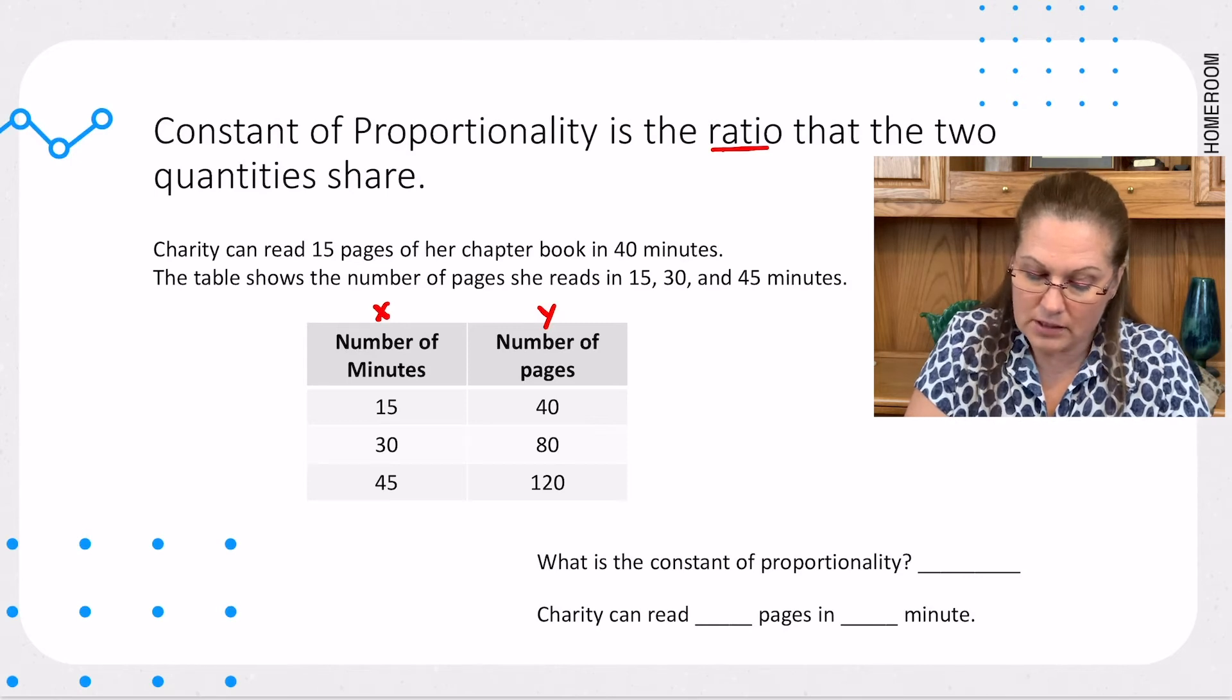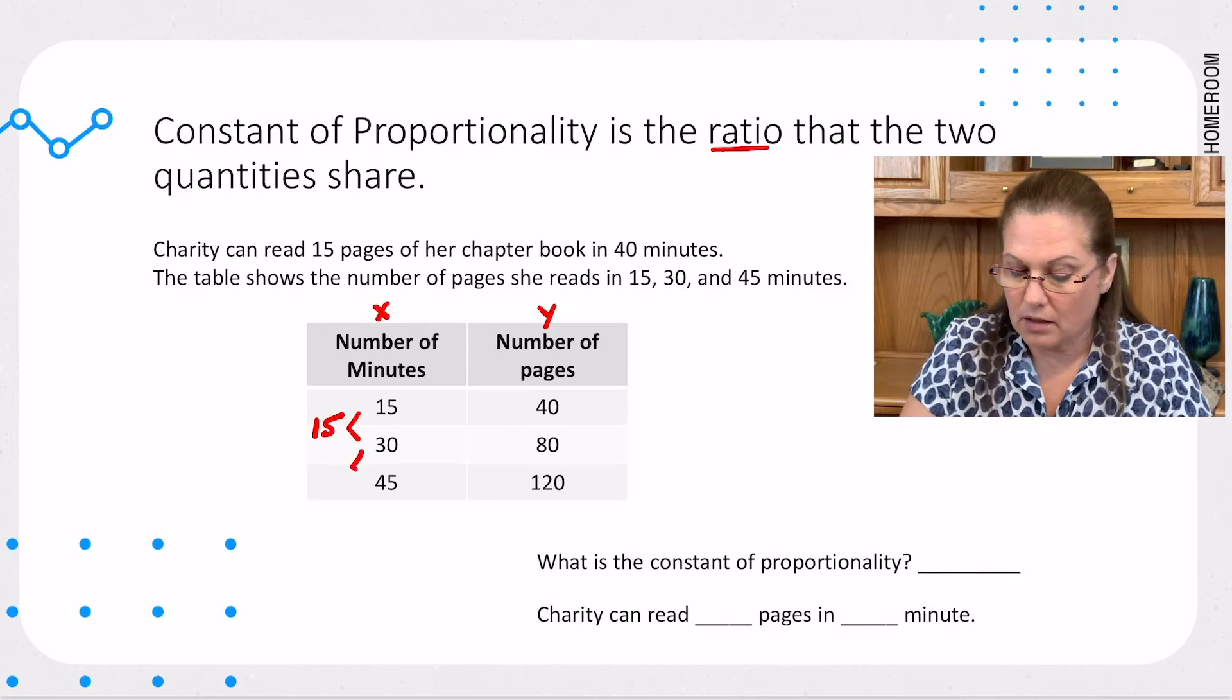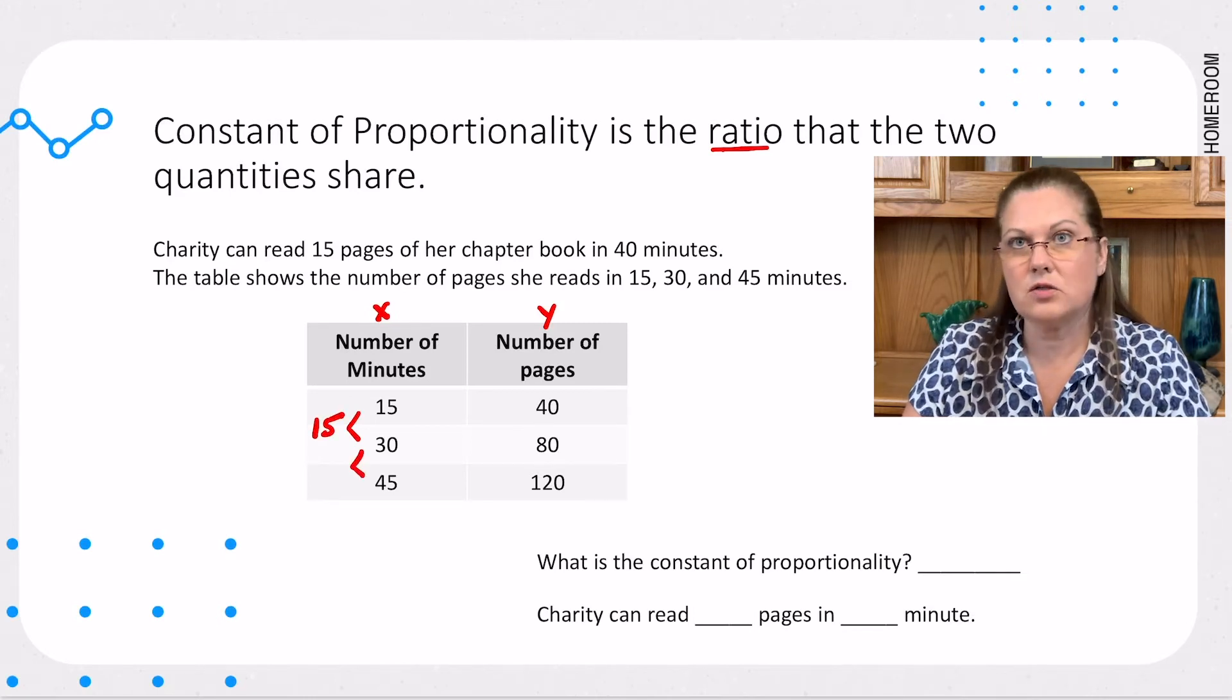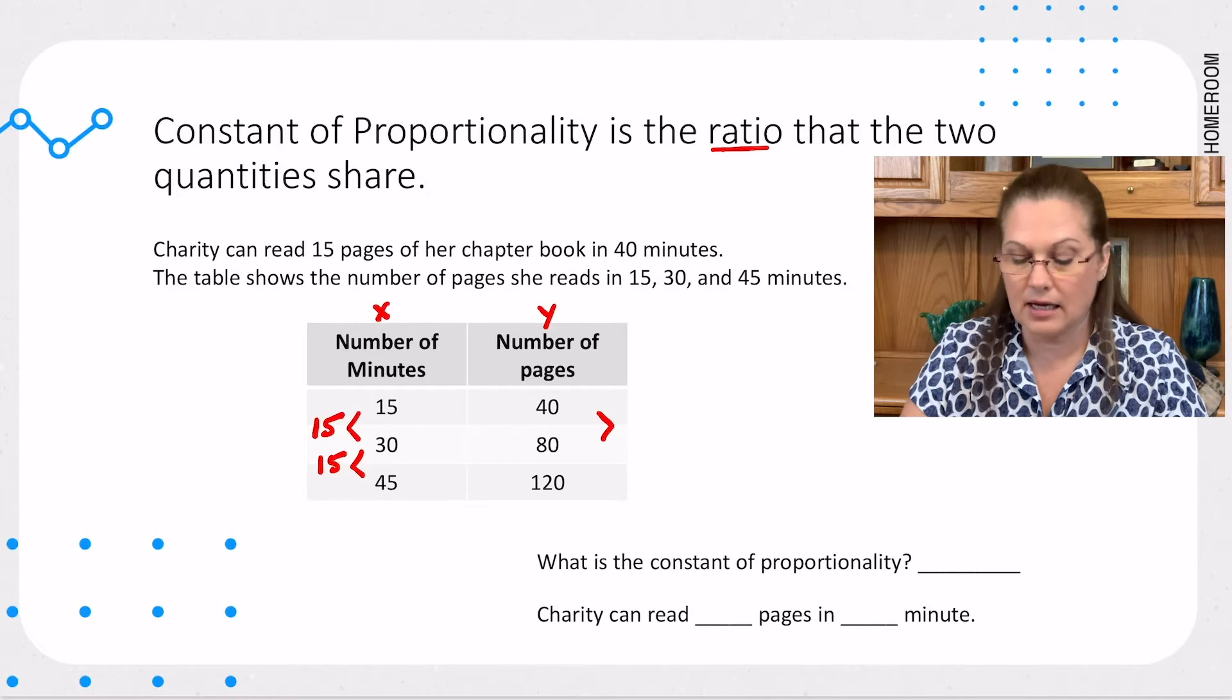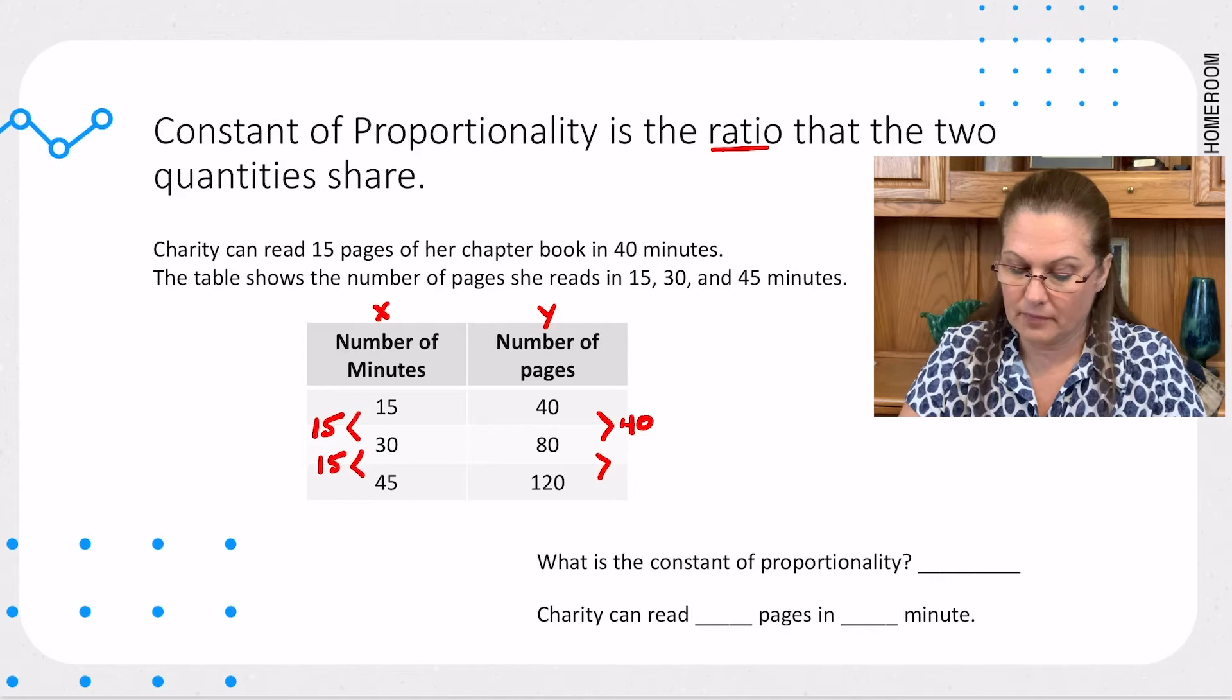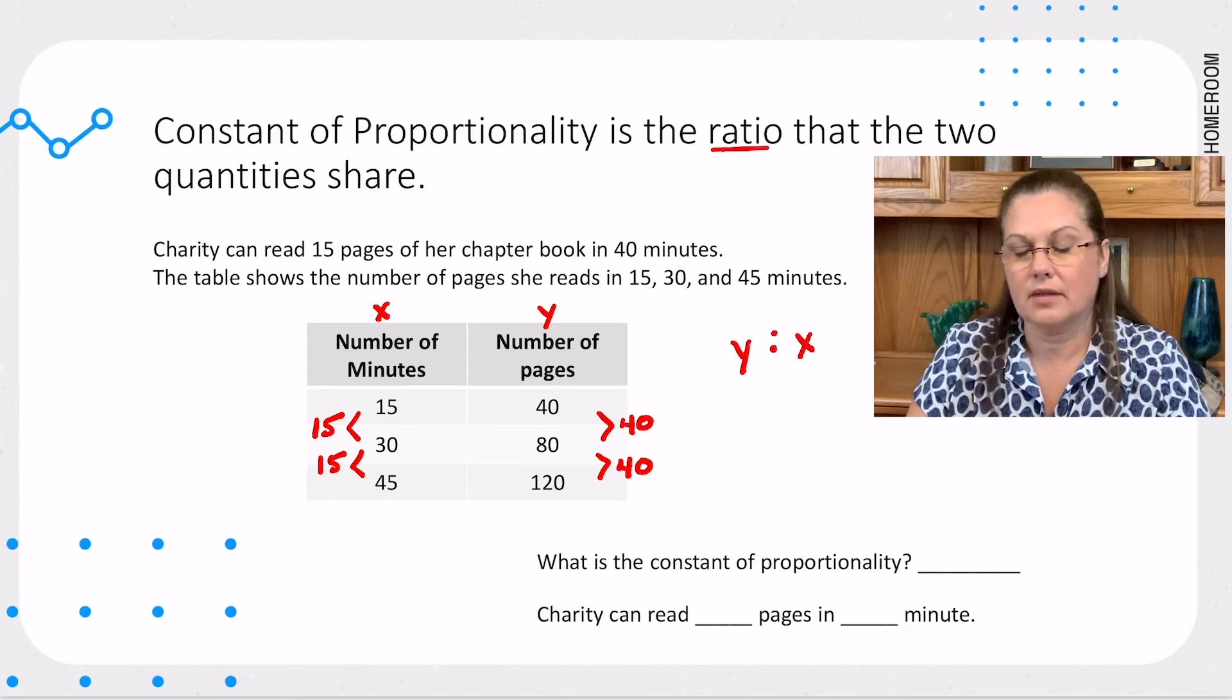The difference between 15 and 30 is 15. Our difference between 30 and 45 is also 15. Our difference between 40 and 80 is 40. And our difference between 80 and 120 is 40. So, what is our ratio? Remember, it's always y to x. So, our ratio is going to be 40 to 15.